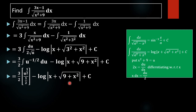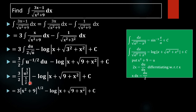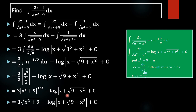Since c is a constant it doesn't matter, and we substitute back u equals x squared plus 9. So u raised to half becomes x squared plus 9 whole raised to half, and the 2s cancel. Our final answer is 3 times square root of x squared plus 9 minus log of x plus square root of x squared plus 9, plus c.